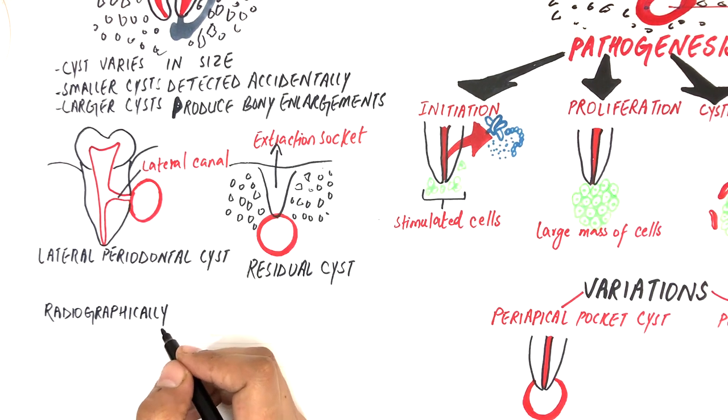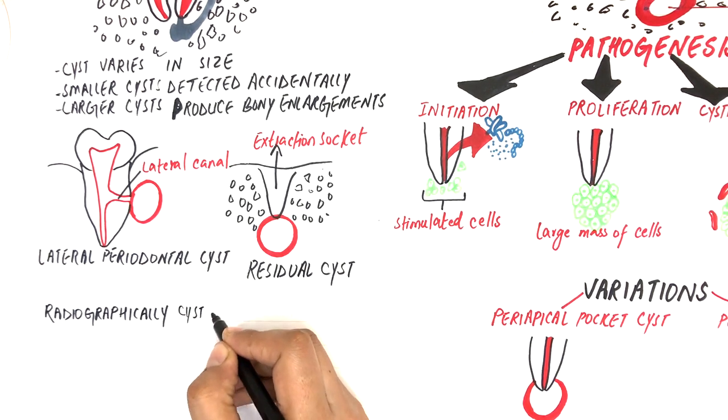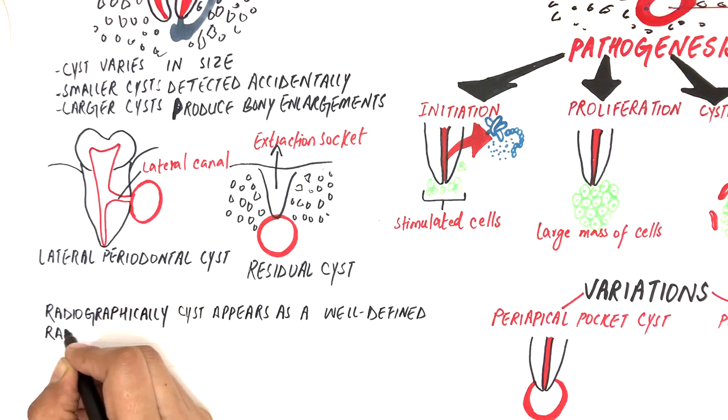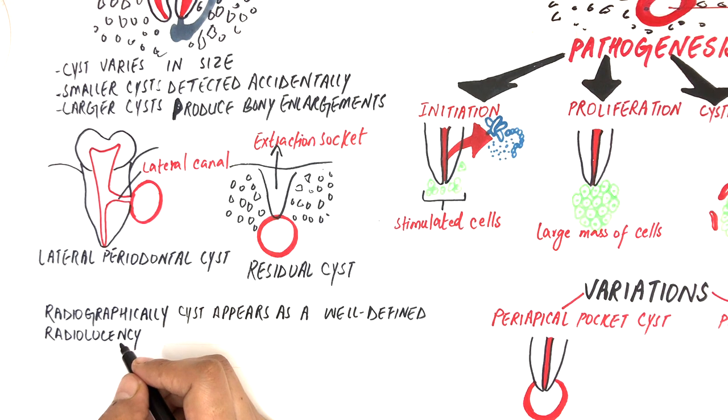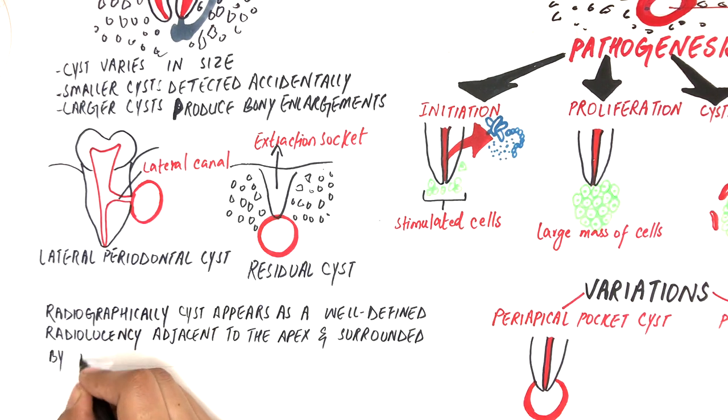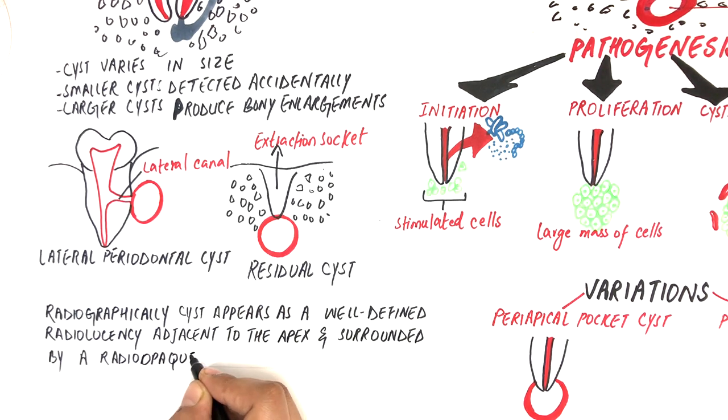Radiographically, the cyst appears as a well-defined radiolucency adjacent to the apex of a tooth. The well-defined radiolucent zone is surrounded by a radio-opaque rim. The cyst sometimes may cause resorption of the associated tooth.